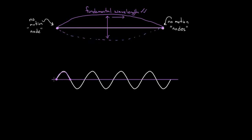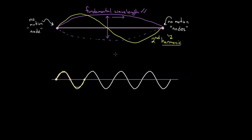So that's the fundamental wavelength. What would the next possibility look like? We have to go from node to node — the fundamental was the first. The next standing wave would come up, go down, and come back up to meet a node at the other end. That would be the next wavelength, and it's called the second harmonic — second because it's the second possibility, harmonic because these are resonances, a term used a lot with musical instruments. The third harmonic comes up, goes down, goes back up, and then comes back down.